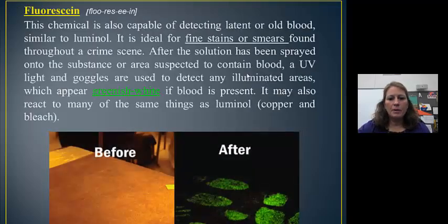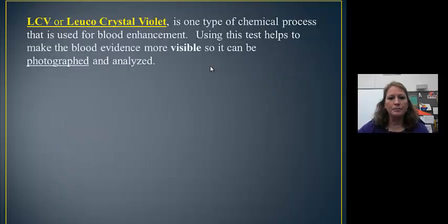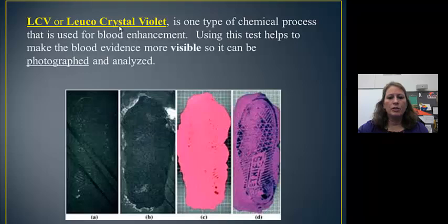Another type of chemical that we can apply, these are for fine-stained smears, and this will glow a greenish-white—this is fluorescein. It works similar to luminol, but again, it can react with other things like copper and bleach. There is another, crystal violet, luco-crystal violet, and they will use this if they need to photograph an image.